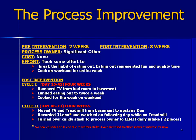Cycle two took place over four weeks with additional changes on top of cycle one. The TV and treadmill were both moved from the basement to the upstairs den, next to the bedroom, making it more easily accessible and a more inviting space — the basement felt cold and uninviting. I also began recording the Jay Leno show and watched it the following day while exercising on the treadmill for 45 to 60 minutes. I turned over my candy stash to my process owner to limit daily intake, since overeating reduced my motivation to exercise. Incidentally, there were no new Jay Leno episodes due to a writer's strike, so I switched to other shows of interest.